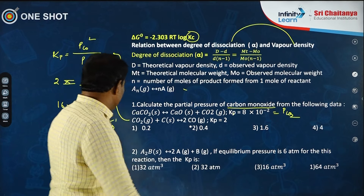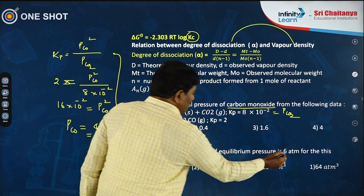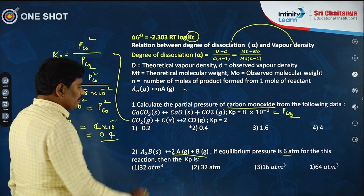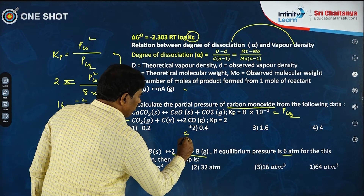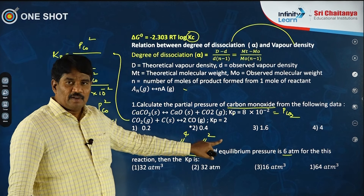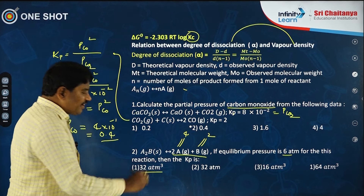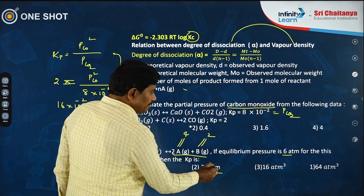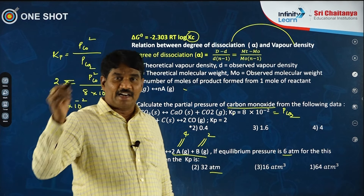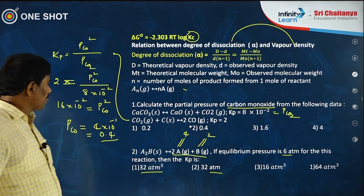Revisiting A₂B(s) ⇌ 2A(g) + B(g) with total pressure 6 atm: A and B form in 2:1 ratio, so partial pressure of A = 4 atm and B = 2 atm. KP = 4² × 2 = 32 atm³. Read questions, options, and units very carefully.